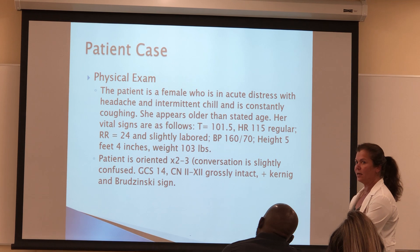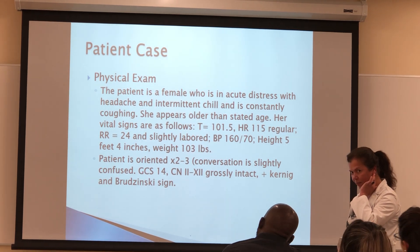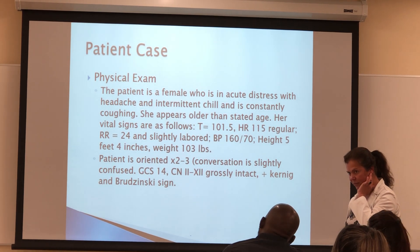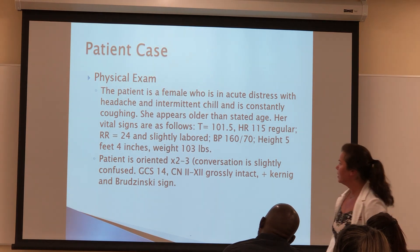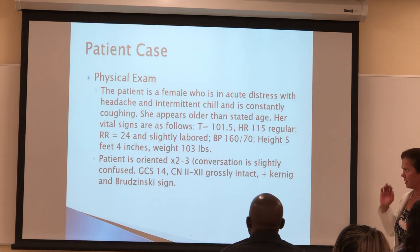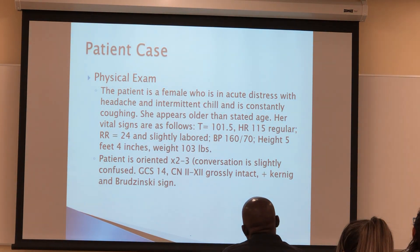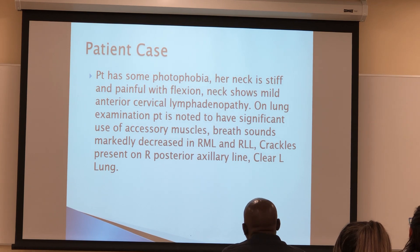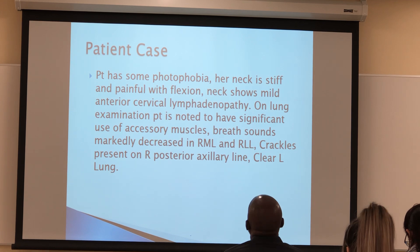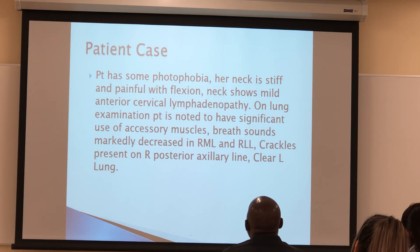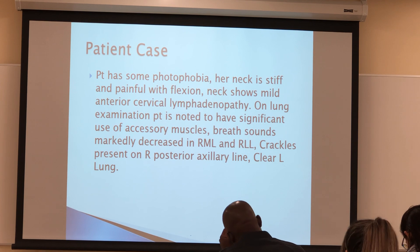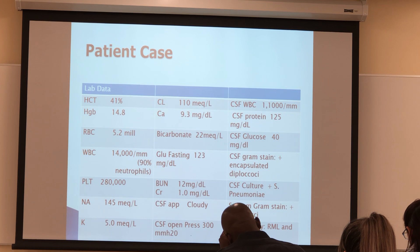Remember that Kernig sign is when you bend the head the knee flexes, and backwards when you flex the knee the head flexes. Brudzinski is similar — I'll show you that in a second. Patient also has photophobia, neck stiffness, cervical lymphadenopathy, using accessory muscles, and decreased breath sounds in the right middle lobe and right lower lobe with crackles; the rest of the lungs are clear.